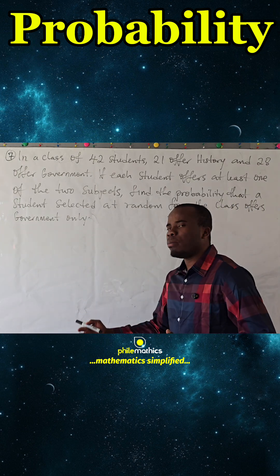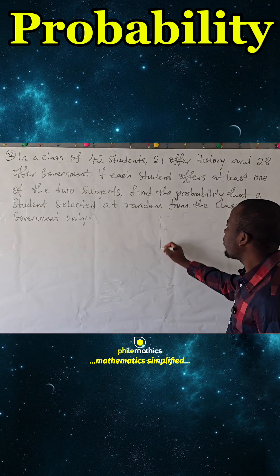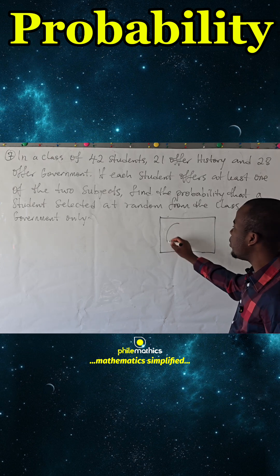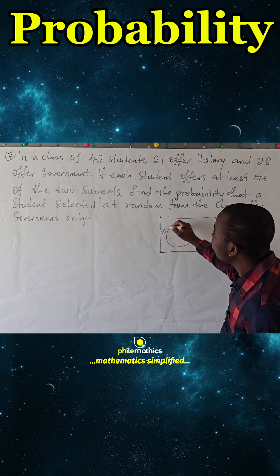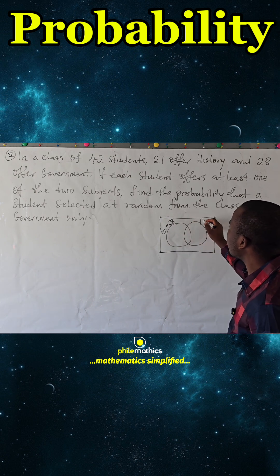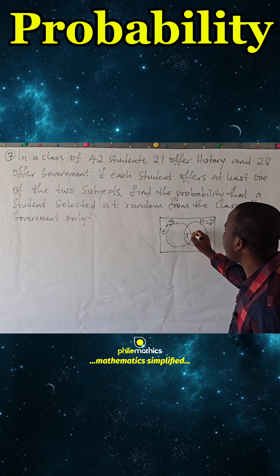An easier way to start this problem is to draw a Venn diagram. And if we draw the Venn diagram, this is the Venn diagram. Let this represent those that studied Government - we are told that there are 28 of them. And let this represent those that studied History - we are told that there are 21 of them. And let this represent those that studied both subjects, which we don't know. Let us call it X.